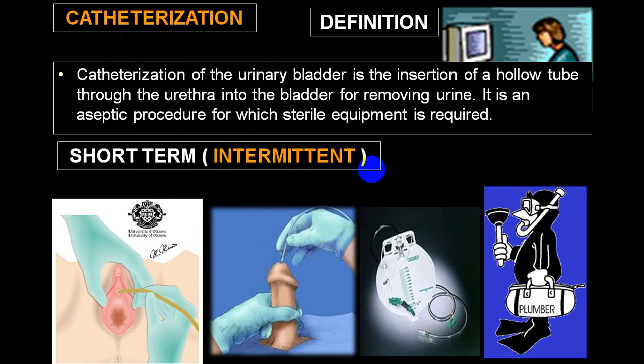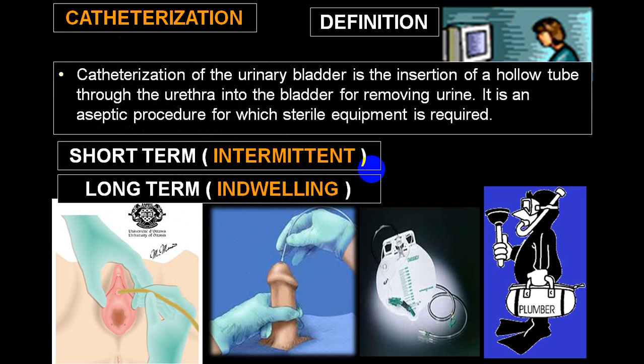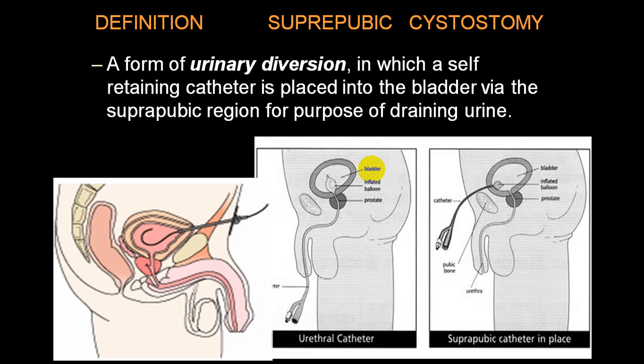Urinary catheterization may be short-term, called intermittent, where the catheter is removed after some period and the person is without any catheter, or long-term — called an indwelling catheter — for a longer period, which can be permanent or intermittent. Indwelling catheters are usually utilized in a person who has chronic obstruction or chronic incontinence.